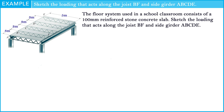First of all, we need to look at the picture and find the behavior of the slab, which acts as a one-way slab or two-way slab. To compute the behavior of the slab, divide the long side of the slab by the short side. If the result is less than two, the slab behaves as a two-way slab. But if the result is more than two, the slab behaves as a one-way slab.